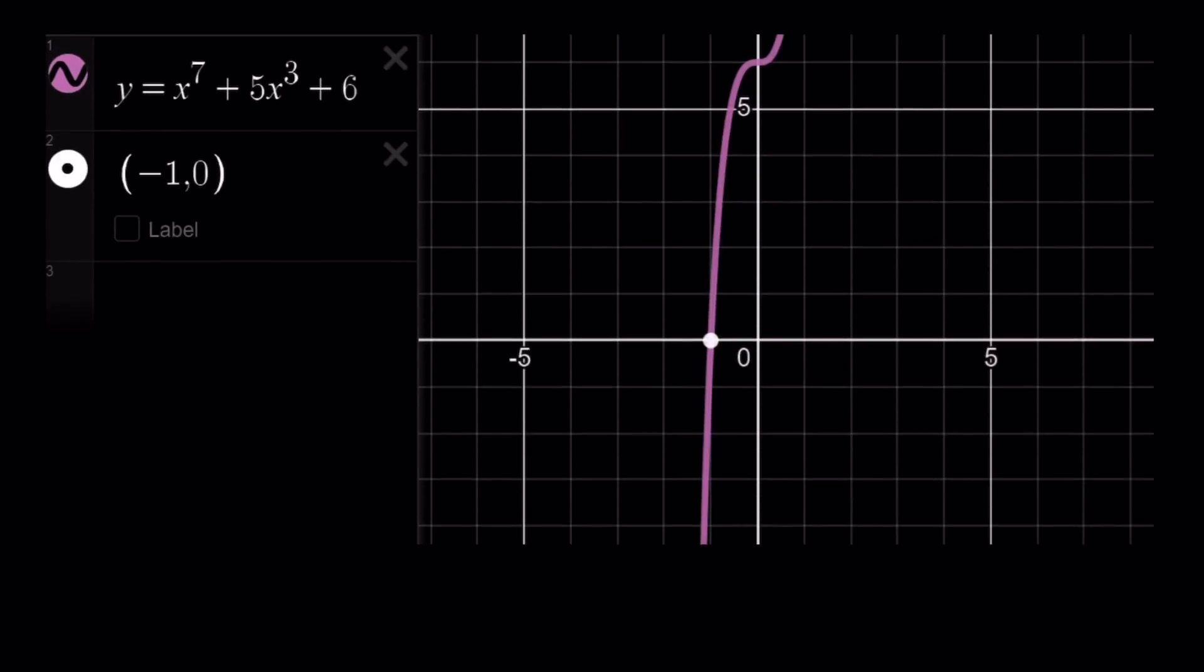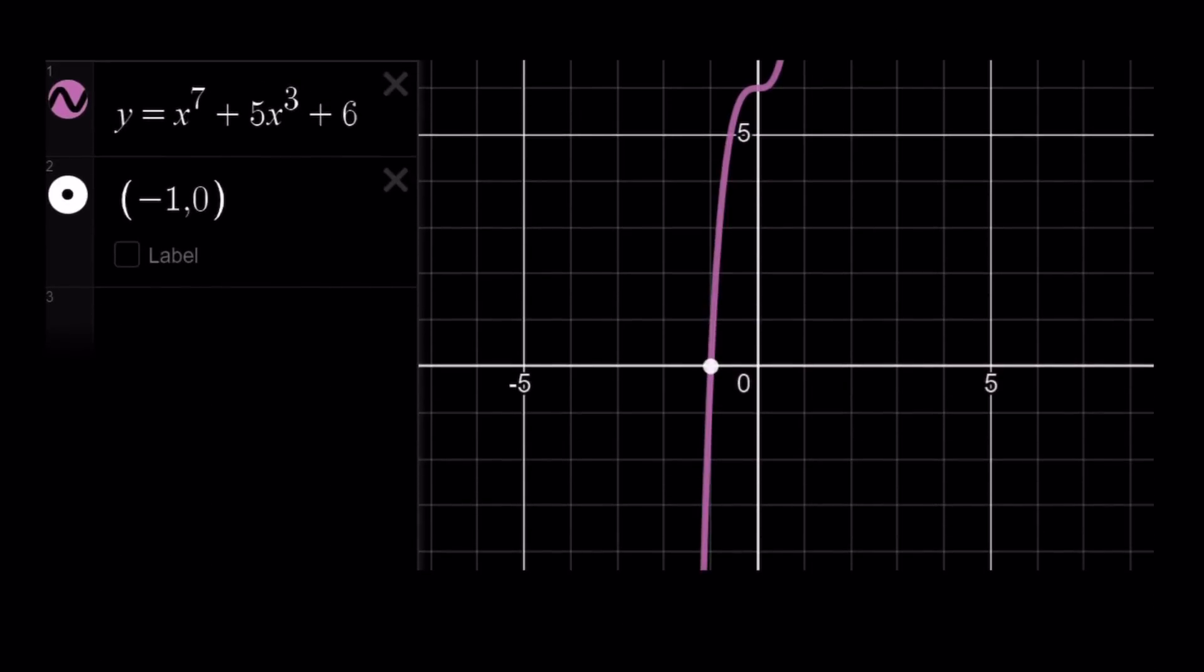Here's the graph of our function. As you can see, it is always increasing. And at zero, we do have an inflection point. You can clearly see that, hopefully. Negative 1, 0 is a solution. That's what we found. And also, at zero, you can see that the concavity actually sharply changes.